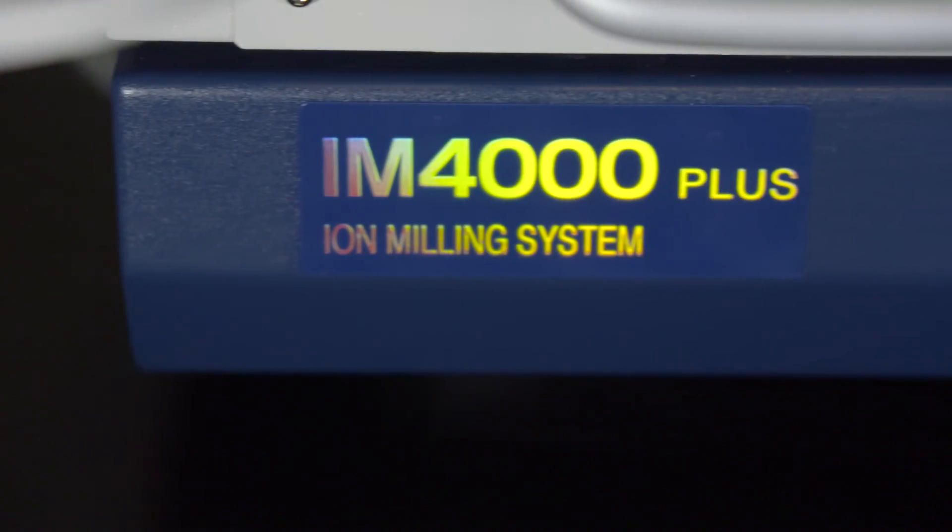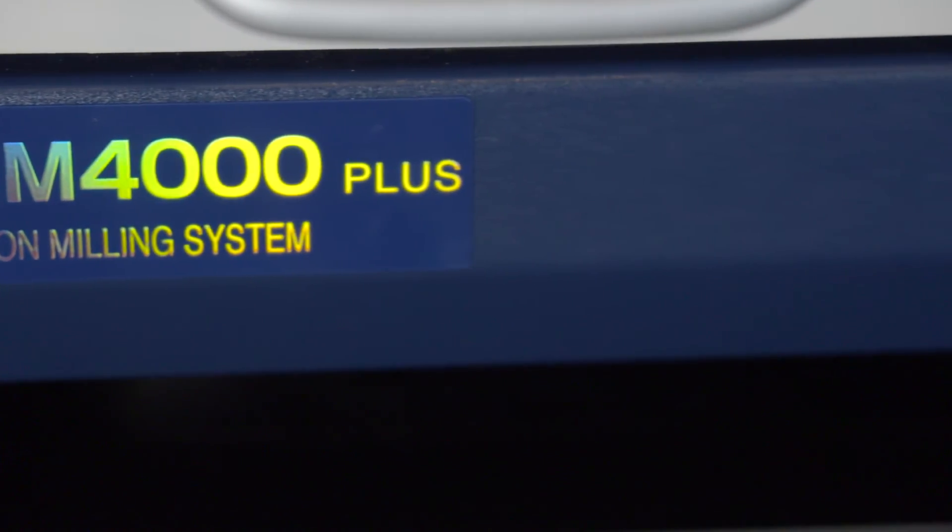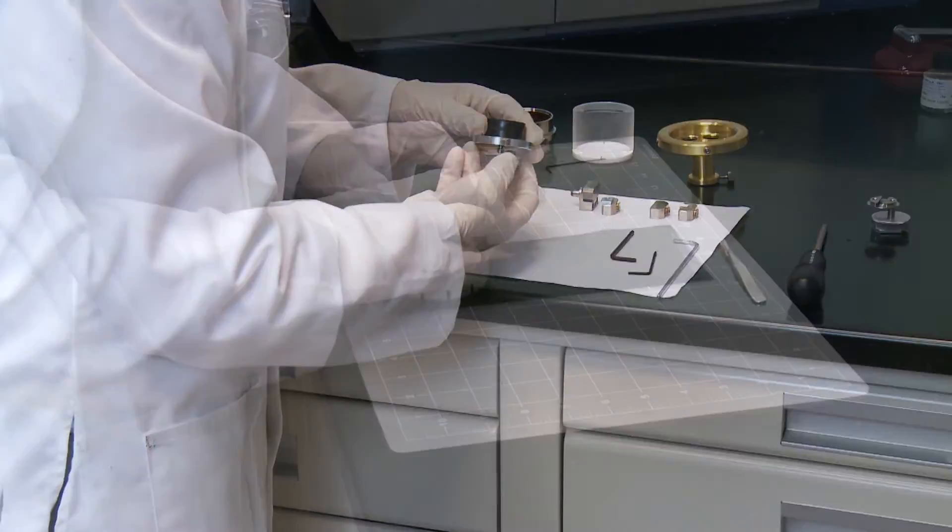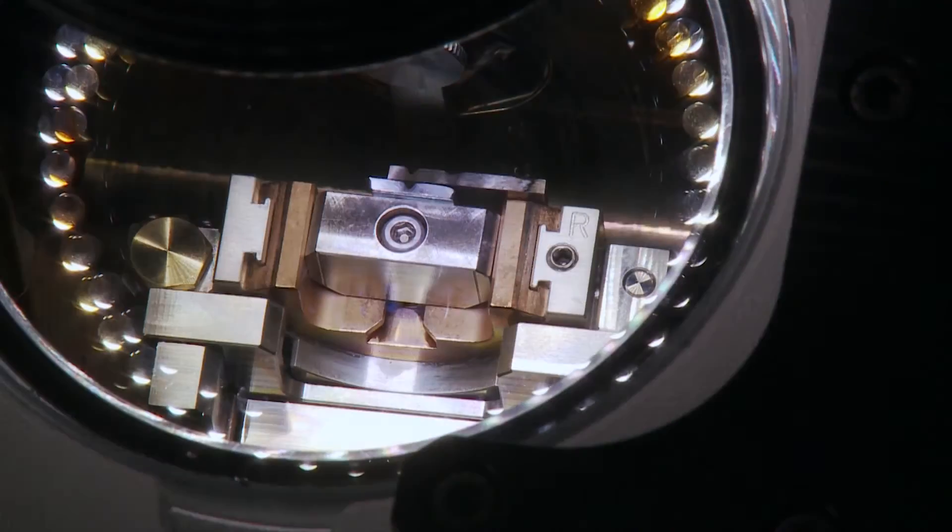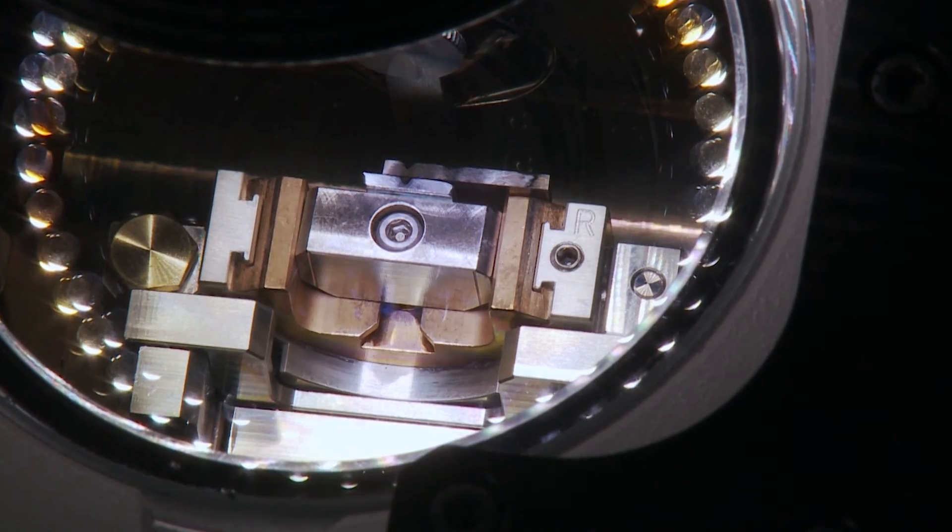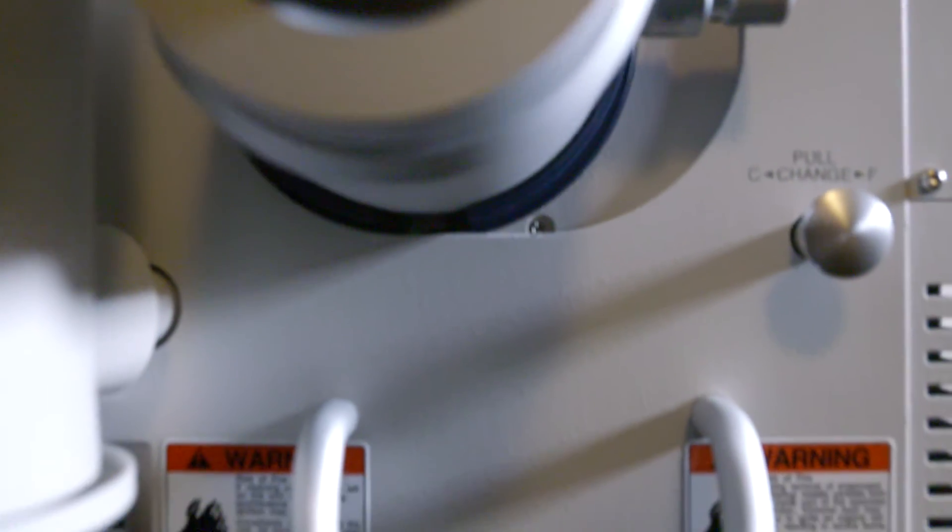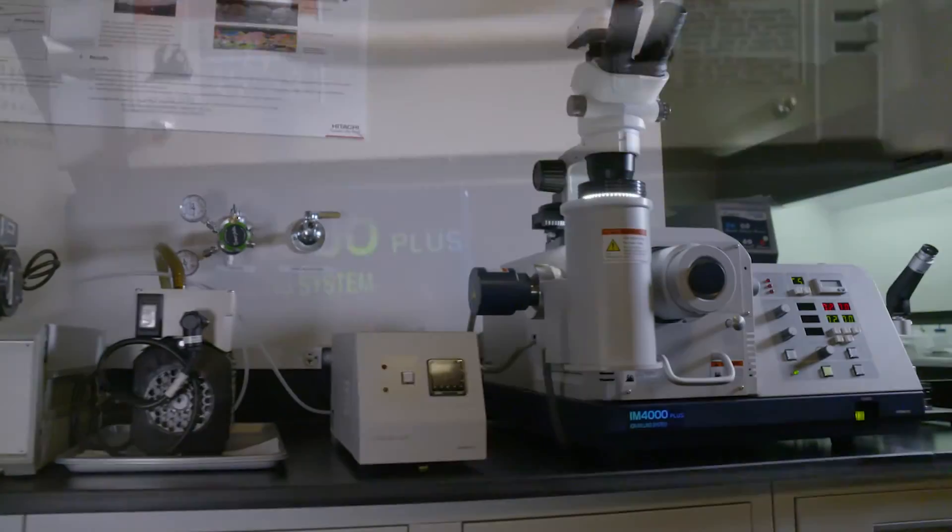The Ion 4000 Plus is a hybrid Ion beam polishing instrument capable of creating cross sections of samples and creating a finely polished surface by flat milling. The Ion 4000 Plus works to reveal the fine internal and surface structures of a wide range of materials.